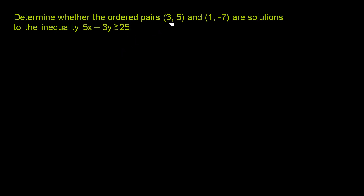We can literally just try each of these ordered pairs. We could try what happens when x is equal to 3 and y is equal to 5 in this inequality and see if it satisfies it. And then we could try it for 1 and negative 7.